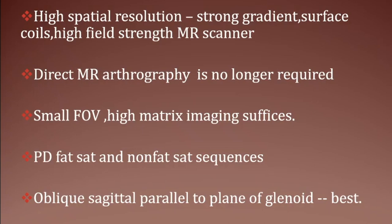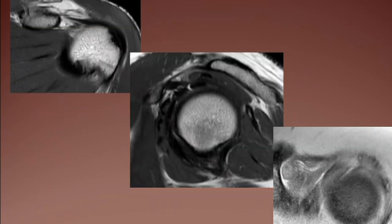We have to remember that all these structures in this area are very small and require high spatial resolution. This is optimized by strong gradients, surface coils, and high field strength scanners. PD-FATSAT and non-FATSAT sequences are used. Oblique sagittal parallel to the plane of the glenoid is best. Axial cuts show the biceps pulley complex nicely.